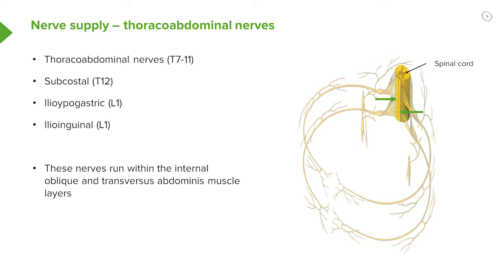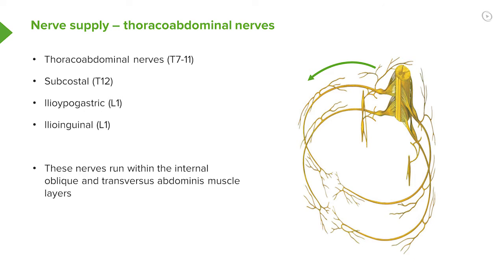The spinal cord is divided into 31 segments, and here we're looking at just two of these segments giving rise to a pair of spinal nerves — one coming in this direction, one coming in this direction.